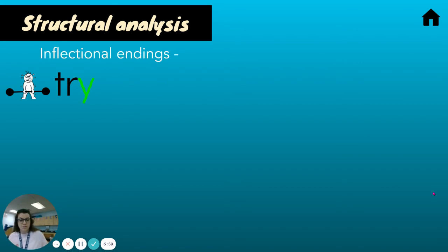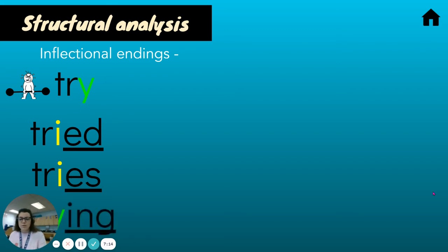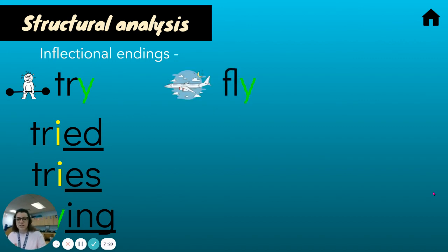So 'try' — when we want to change that word to 'tried,' you change the Y to an I and add ED. What about 'tries'? You change the Y to an I and add ES. When we look at 'trying,' we leave the letter Y and just add ING. Let's look at our next example.